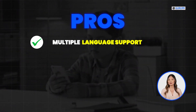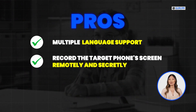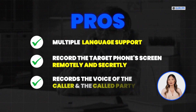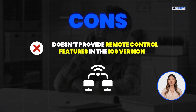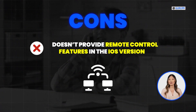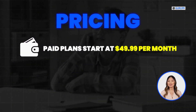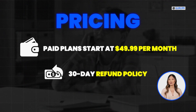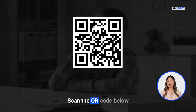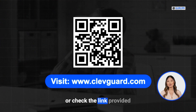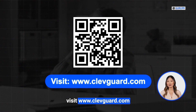Pros: it provides multiple language support, can record the target phone's screen remotely and secretly, and can record the voice of the caller and the called party. Cons: doesn't provide remote control features in the iOS version. Paid plans start at $49.99 per month, with a 30-day refund policy from the date of purchase. Scan the QR code below or check the link in the description to visit www.clevguard.com.